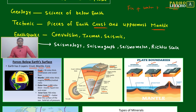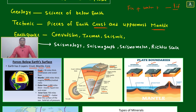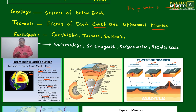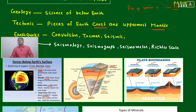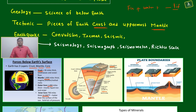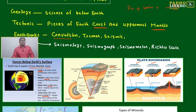Plate boundaries can be divergent, convergent, or transform. When plates meet, they create friction, and that friction can create volcanoes or sometimes earthquakes.